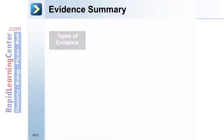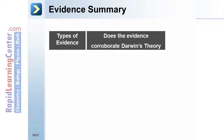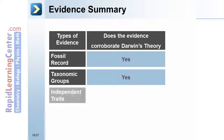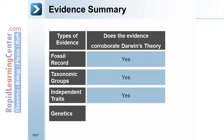In summary, the types of evidence — fossil records, taxonomic groups, independent traits, and genetics — all corroborate Darwin's theory of evolution.